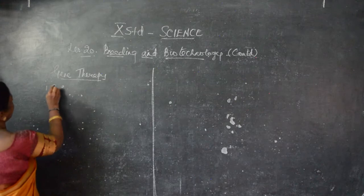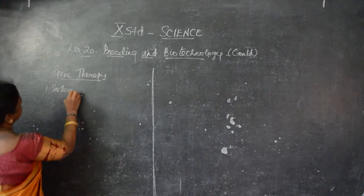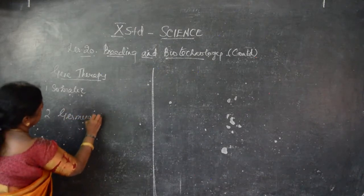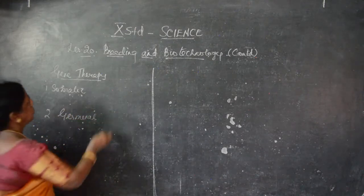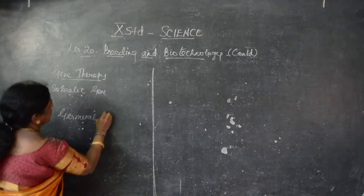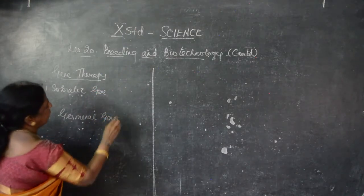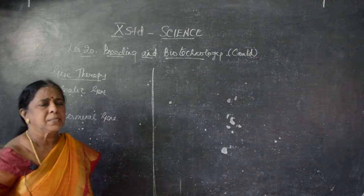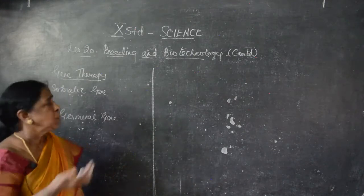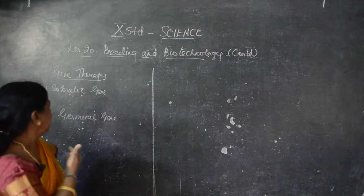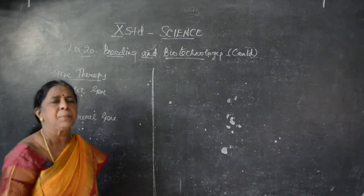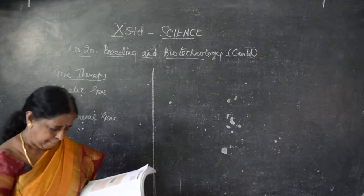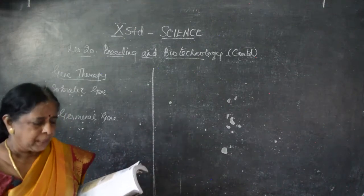There are two kinds of gene therapy. One is somatic and the other one is germinal — that is, the germline or reproductive gene. Somatic gene therapy is not inherited, but germinal gene therapy is inherited because it comes from reproductive genes.